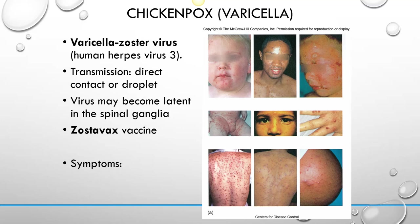Symptoms of chicken pox include the eruption of itchy lesions on the surface of the skin that break open forming a yellow crust. If you scratch them open, the virus will emerge and infect neighboring cells.